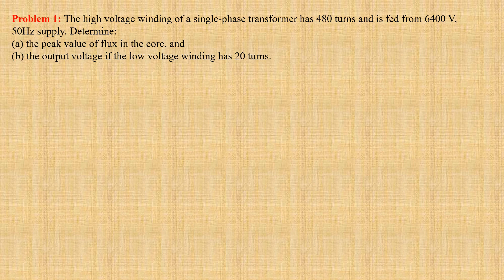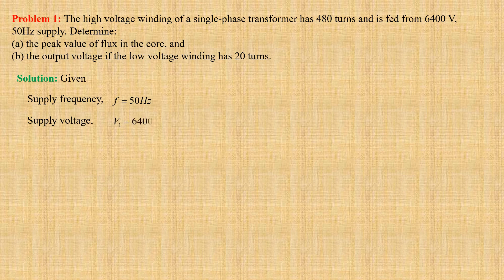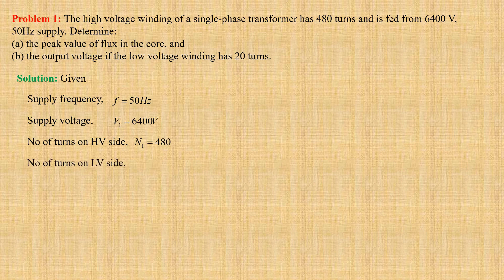Let us jot down the given data. Supply frequency F equals 50 hertz. Supply voltage V1 equals 6400 volts. Number of turns on high voltage side N1 equals 480. Number of turns on low voltage side N2 equals 20.